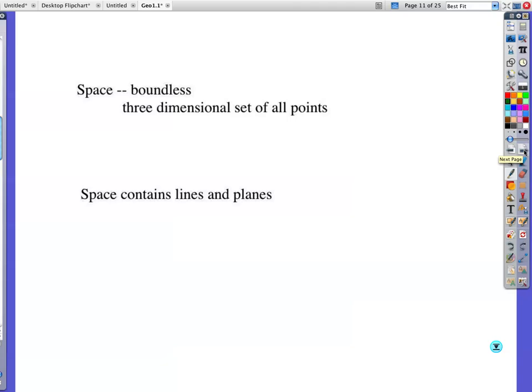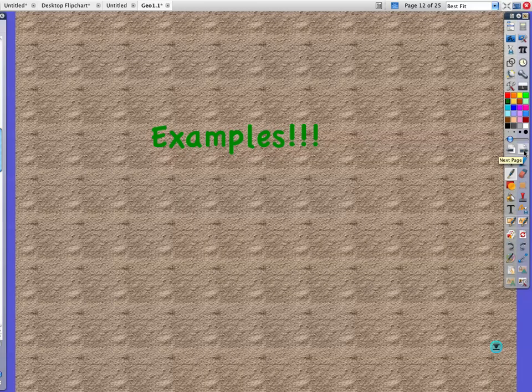Actually, I'm not going to have you write this down, but I want you to look at it. Space is boundless. It's a three-dimensional set of all points. And space is where all of our lines and planes are contained. I just, I feel like I need to say it, but I don't feel like you need it in your notes. We're going to move on to the examples, and I'm going to change this. We're going to move on to another video. So this is like a two-set video here.